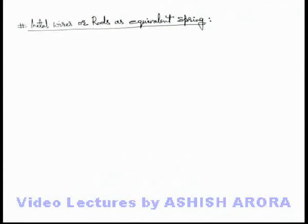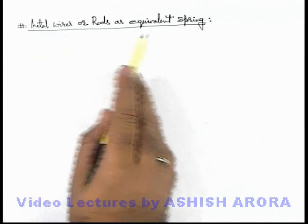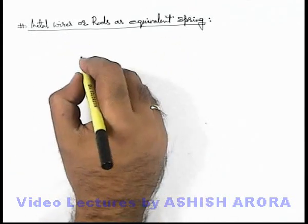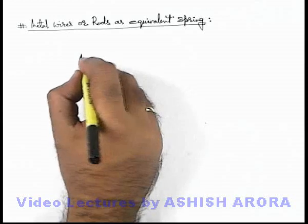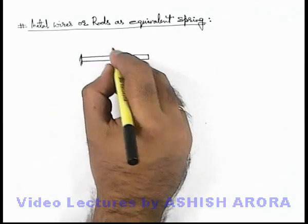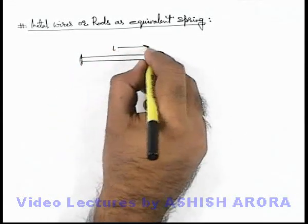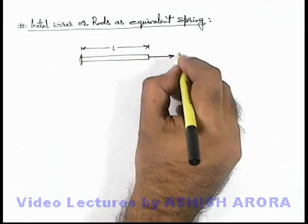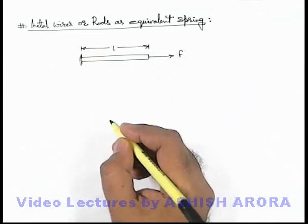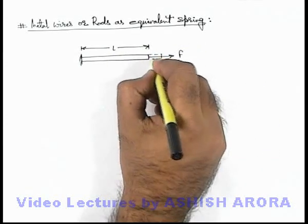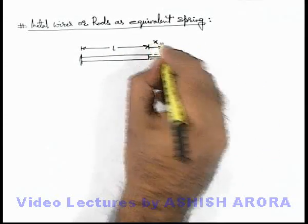Let us discuss a situation where we treat metal wires or rods as equivalent springs. If we have a metal rod which is clamped at one end, say it is of length L, and the rod is pulled in the outward direction by an external force F, and due to elasticity the rod is elongated by distance x.